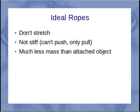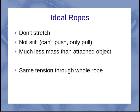And that rope has to have much less mass than the attached object. Again, in general physics, we're typically using ideal ropes. And that means we've got the same tension through the whole rope.